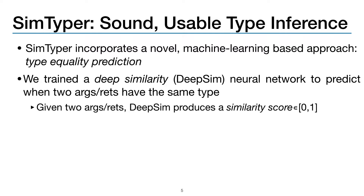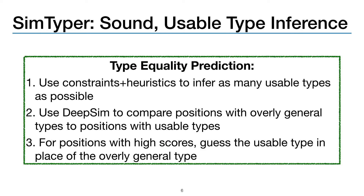So we built SimTyper, which incorporates a novel machine-learning-based approach which we call Type Equality Prediction. This works by using a deep similarity, or DeepSim, neural network to predict when two arguments or returns have the same type. Given two arguments or two returns, the network produces a similarity score in the range 0 to 1. The Type Equality Prediction algorithm first uses constraints and heuristics to infer as many usable type annotations as possible, then uses the DeepSim network to compare positions with overly general types to positions with usable types. For any positions with high scores, we guess the usable type in place of the overly general type, and if that guess is consistent with the constraints, we use the usable type as our new solution.